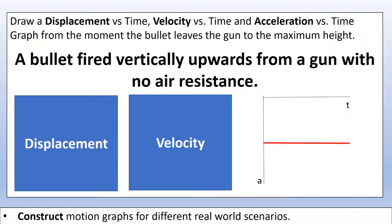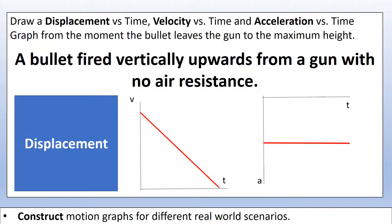The velocity graph shows the bullet from its starting point until it reaches maximum height. At maximum height, the velocity is zero before the bullet starts coming back down. The gradient is constant and negative throughout. Now have a go at drawing the displacement graph.